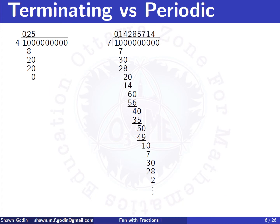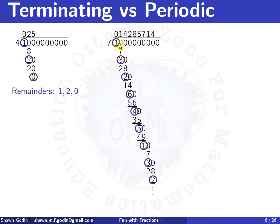If we look at the remainders of one quarter, the first remainder was one, then two, then zero. Over here with one seventh, again my first remainder was one, then three, two, six, four, five, one, three, two... and so on down the line. If I look at the remainders, they start repeating: one, three, two, six, four, five, one, three, two — and so on.